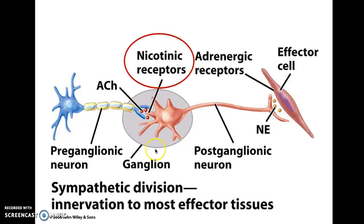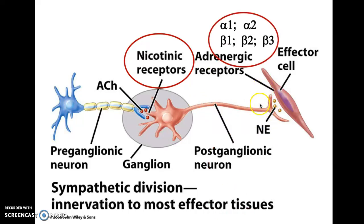The receptors on the cell body of the postganglionic neuron are nicotinic receptors. Nicotinic receptors are a type of cholinergic receptor, meaning they respond to acetylcholine. They get their name because they also respond to nicotine — the same nicotine found in tobacco and cigarettes. The adrenergic receptors at the effector get their name because they respond to norepinephrine and its chemical cousin epinephrine, which has the other name adrenaline.